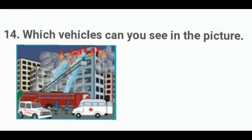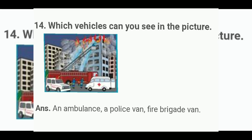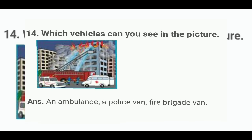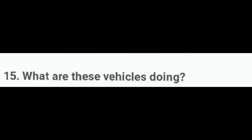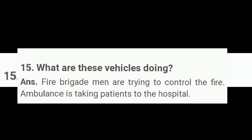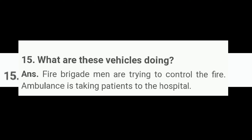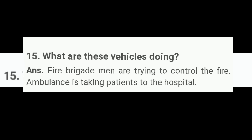Now observe this picture. Which vehicles can you see in the picture? Answer: an ambulance, a police van, and a fire brigade van. What are these vehicles doing? The answer is: fire brigade men are trying to control the fire. Ambulance is taking patients to the hospital.